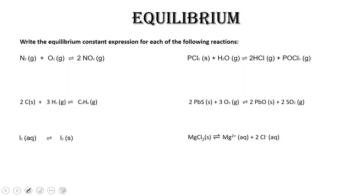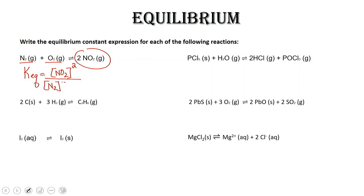Let's do some practice writing equilibrium expressions. I will do a few of them with you, then you can pause the video and practice on your own. For the first one, the K equilibrium is the products over the reactants. It is going to be the concentration of nitrogen dioxide raised to the power of 2, divided by the concentrations of the reactants. Notice that there are no coefficients for those reactants, so there is no exponent for each of them.